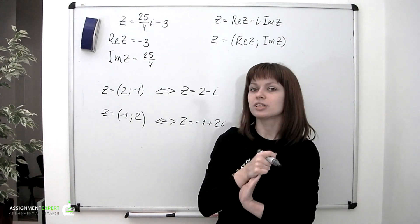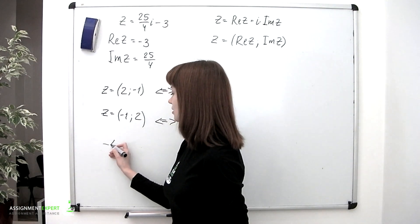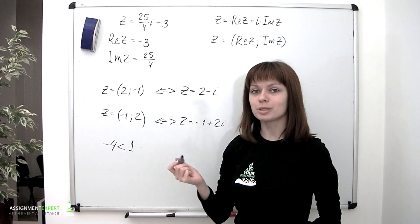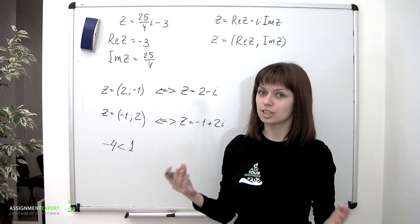Considering real numbers, we're used to comparing them. So we can, without hesitation, say that -4 is less than 1. But how do we compare two complex numbers? And the answer to that is in no way.